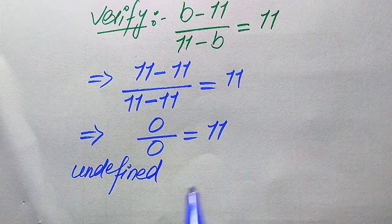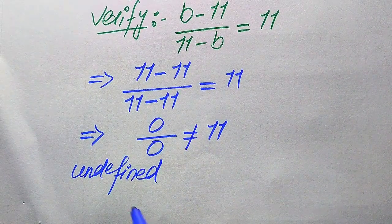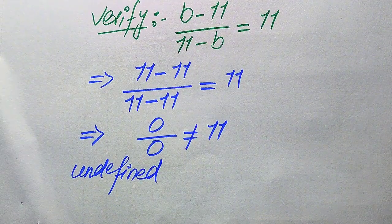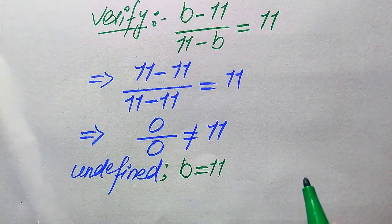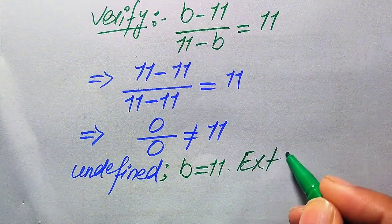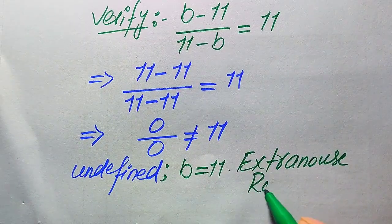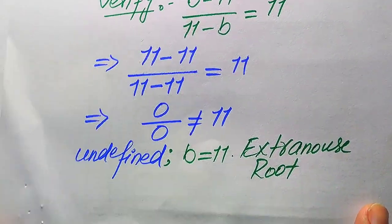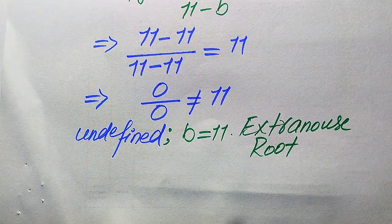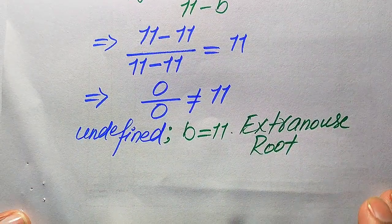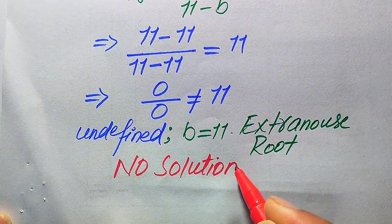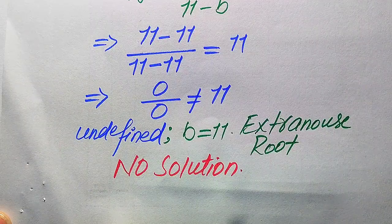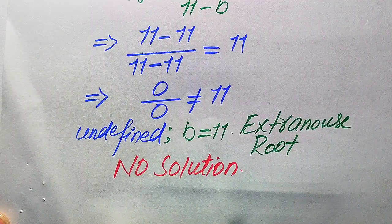Since the left-hand side is undefined, both sides are not equal. We conclude that b equals 11 is an extraneous root of the given equation, because it does not satisfy the original equation. Since we cannot get any other value of b that satisfies the equation, this question has no solution.